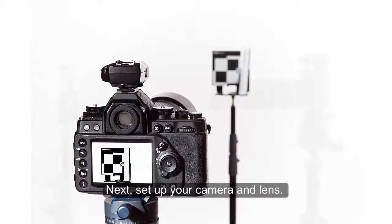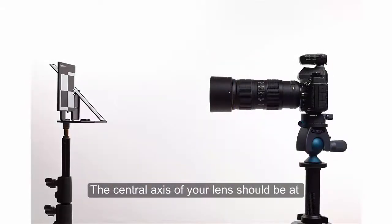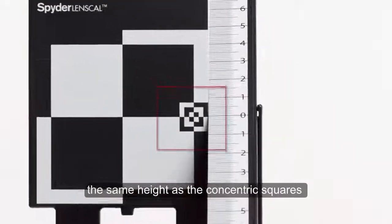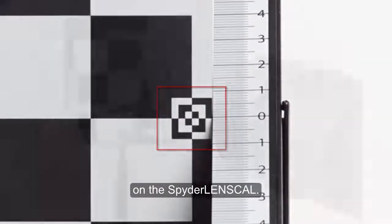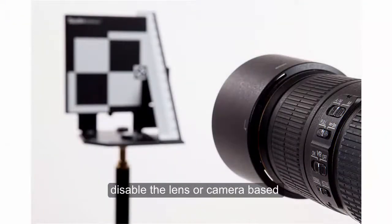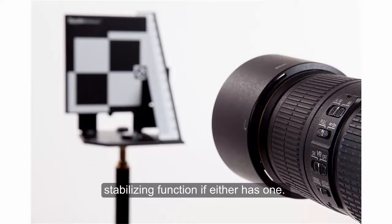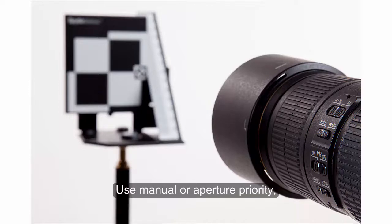Next, set up your camera and lens. The central axis of your lens should be at the same height as the concentric squares on the Spider Lens Cal. Enable autofocus and disable the lens or camera-based stabilizing function if either has one. Use manual or aperture priority, set the lens to the widest aperture, and the lowest native ISO setting.